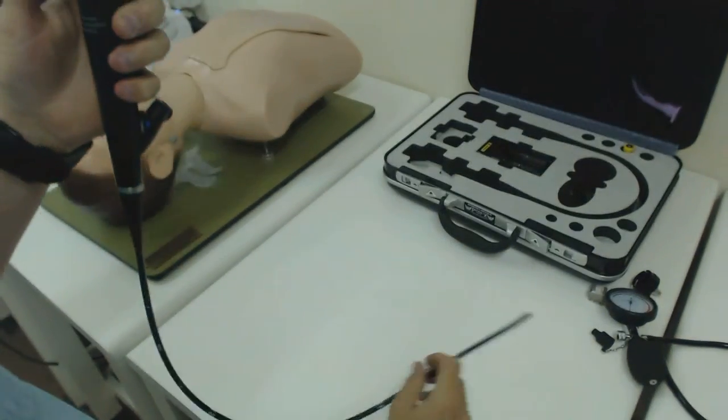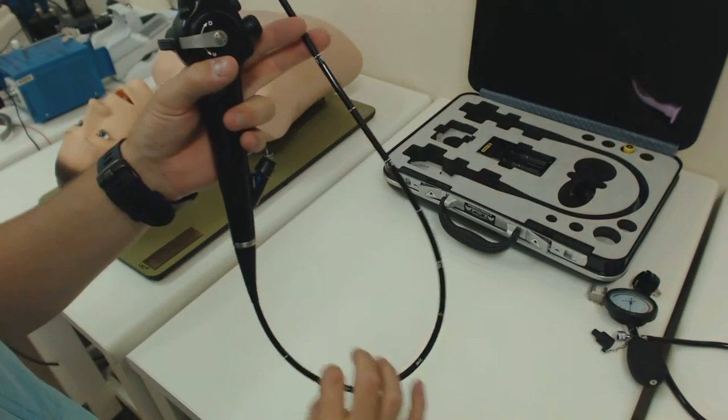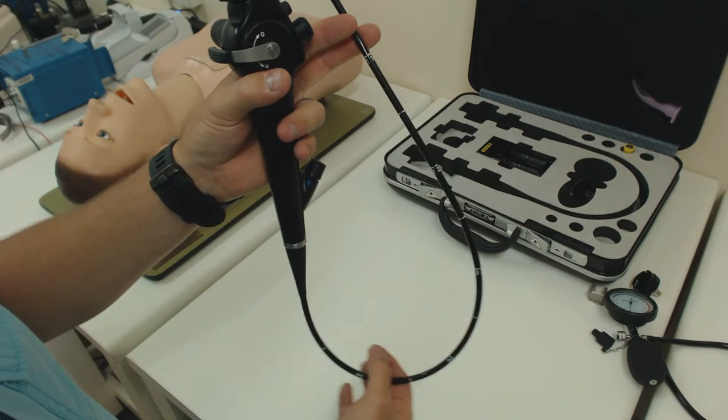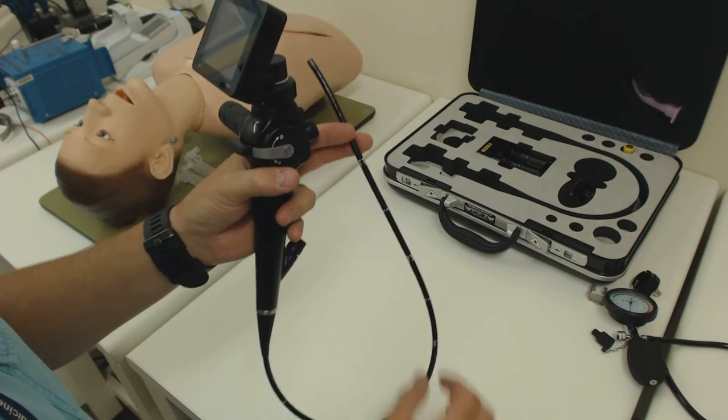Now the scope is fully assembled and we're ready to operate it. If I was going to use this clinically now, I would put a thin layer of lubricant on the outside of the scope and I would preload my endotracheal tube ready to go.